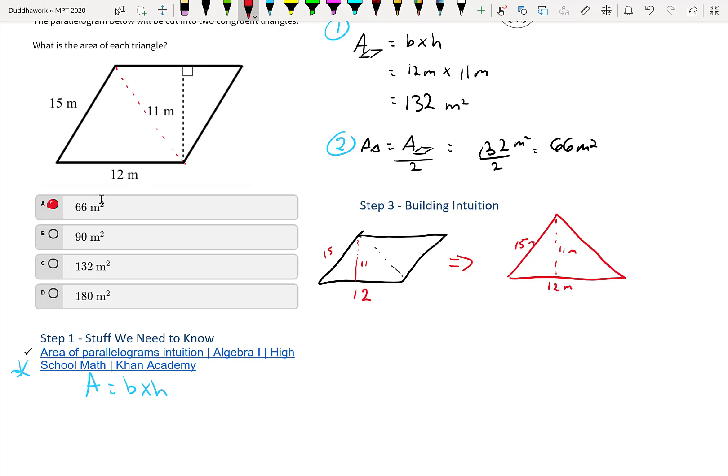We know that the height is 11 meters. So it's going to be 12 times 11 divided by 2, which is 132 divided by 2, which is 66 meters squared. It's the same thing that should make sense and it confirms our answer. So that's great.